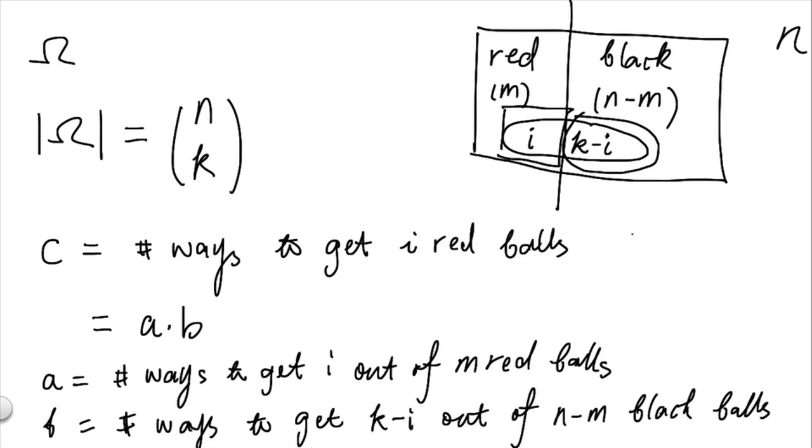To compute what these numbers are, we see that a is equal to m choose i, number of ways to get i red balls, and b is n minus m, the total number of black balls, choose k minus i, the balls that are not red within those k balls.